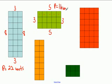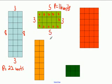You cannot just count the total number of unit marks like one, two, three... up to twelve. That's not the perimeter. You actually have to find the distance on each side.